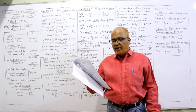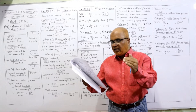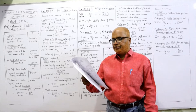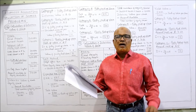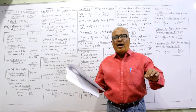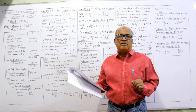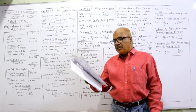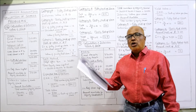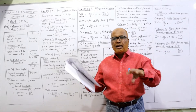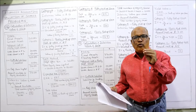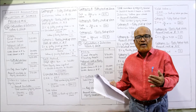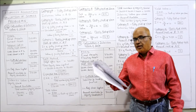10,000 equity shares of 10 each, fully paid — 1 lakh. Next, 10,000 equity shares of 10 each, rupees 8 per share called and paid up. That means the face value is 10 rupees but only 8 rupees have been called and paid; the uncalled amount is 2 rupees. Third category: 10,000 equity shares of 10 each, rupees 5 per share called and paid up — so 5 rupees uncalled.